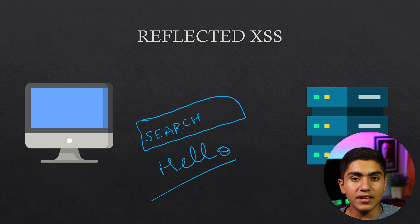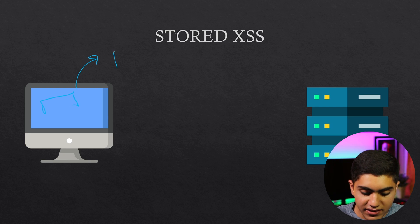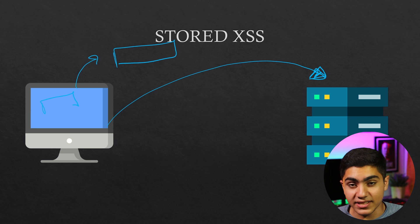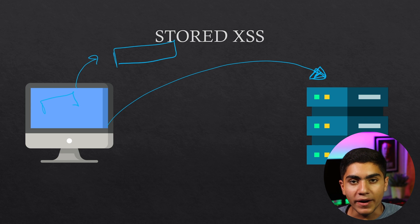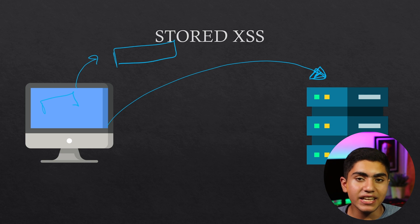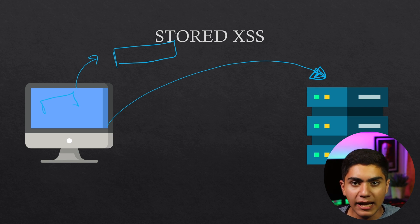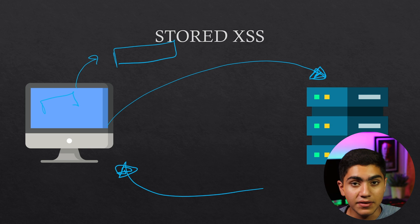Stored XSS is not that different. It happens when you write a comment or something that is permanently stored on the webpage — a comment, a tweet, a post. Social media sites are mostly vulnerable to this because what you write is there for everyone. Anyone who opens that page will see that comment, and if you write malicious code in that comment and the website database renders it, everyone will be vulnerable to this exploit.